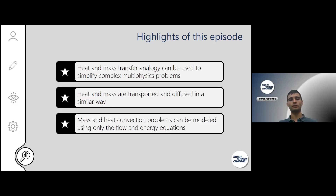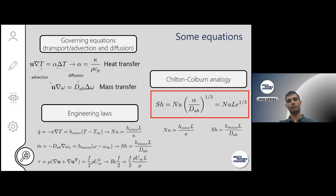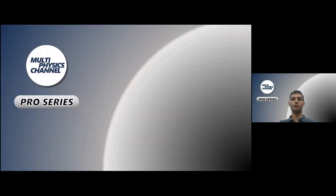The highlights of this episode: the heat and mass transfer analogy can be used to simplify complex multi-physics problems. The analogy holds because heat and mass are transported and diffused in a similar way — they share the same constitutive equations for fluxes and similar governing equations. Mass and heat convection problems can therefore be modeled using only the flow and energy equations, without necessarily introducing the mass transfer equations. Thanks for joining today — I hope it was interesting and useful for your modeling problems.